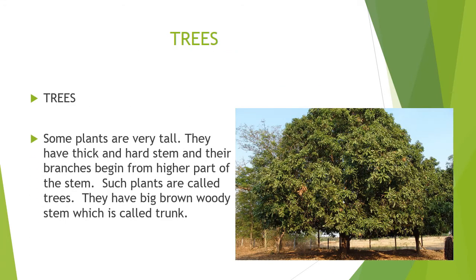Trees. Some plants are very tall. They have thick and hard stem and their branches begin from the higher part of the stem. Such plants are called trees. They have a big brown woody stem, which is called a trunk. They need large space for spreading their branches and usually live for a longer time. Examples of trees are mango, coconut, banyan, pine, etc. Redwood is the tallest tree in the world.